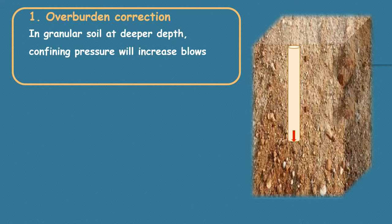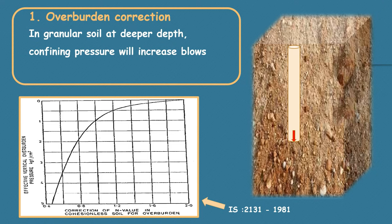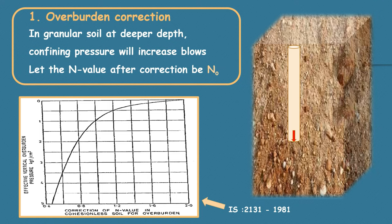In granular soil at deeper depth, confining pressure will increase the blow count. Hence we may overestimate the strata at deeper depth. IS 2131-1981 recommends this graph for overburden correction. Apply overburden correction using this graph. Let the n value after applying correction be n naught.